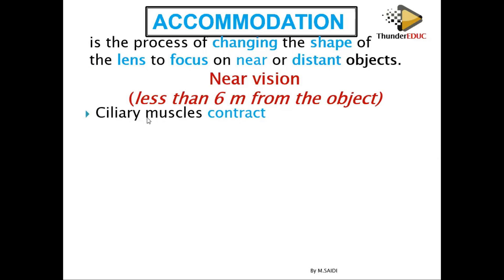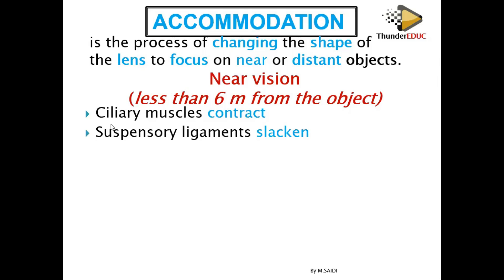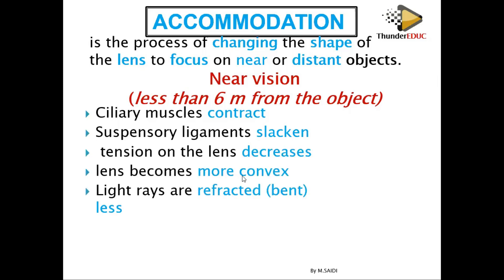When you understand near vision, far vision is just the opposite. The key structures involved are the ciliary muscles, the suspensory ligaments, the lens, and light.